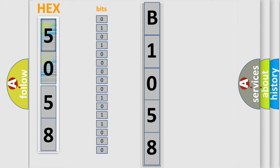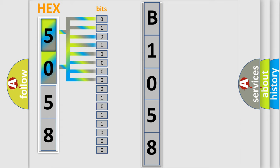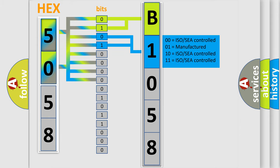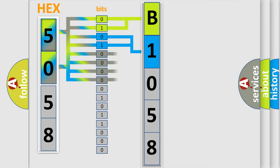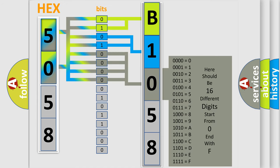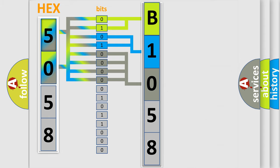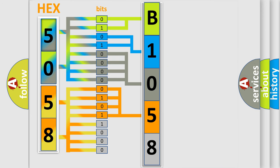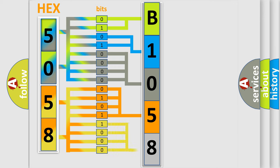The next two bits determine the second character. The last bit styles of the first byte define the third character of the code. The second byte is composed of a combination of eight bits. The first four bits determine the fourth character of the code, and the combination of the last four bits defines the fifth character. A single byte conceals 256 possible combinations. We now know in what way the diagnostic tool translates the received information into a more comprehensible format.